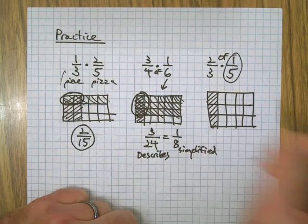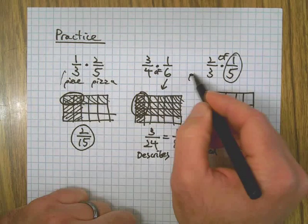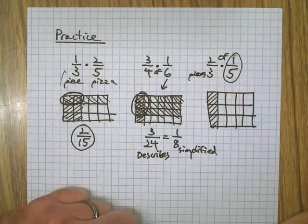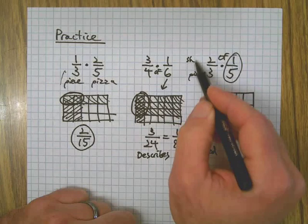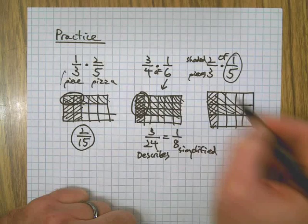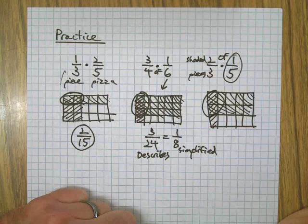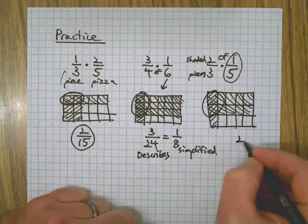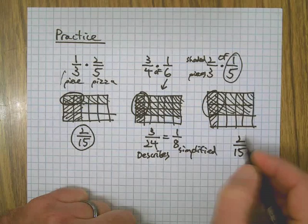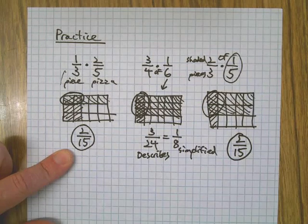Then we're going to take—no extra charge for the sound effects, by the way—and we're going to take two-thirds of that. So we split it into three pieces. Denominator is always the number of pieces; numerator is always what you're shading in a model like this. Shade two out of the three sections. There we go. Two-fifteenths. Crazy, it's the same as the first answer, huh? Wild stuff.